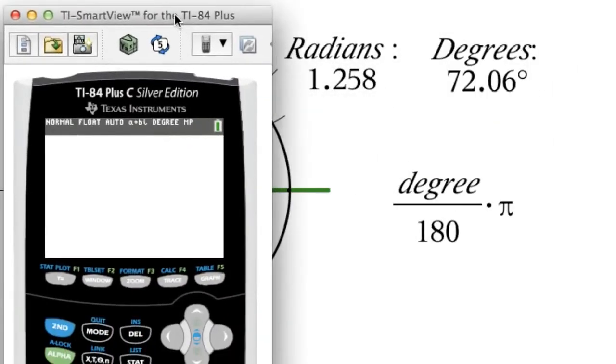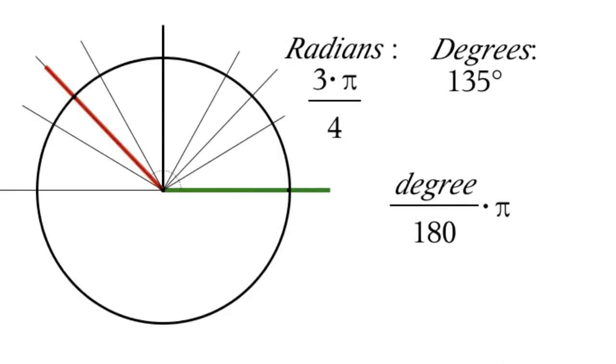Okay, so I'm going to bring in a calculator here. This is a graphing calculator. 72.06 divided by 180, and then we will multiply that by pi, and hit the equals button, and look at that, 1.257.